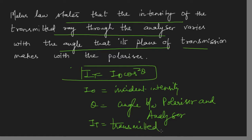So till now we have learned two ways of polarizing light: first, polarization by reflection, and then polarization through transmission — we can make the reflected light polarized and we can make the transmitted light polarized. In the further lectures we will try to see that there are a few special crystals which can also be used to polarize light. Thank you.